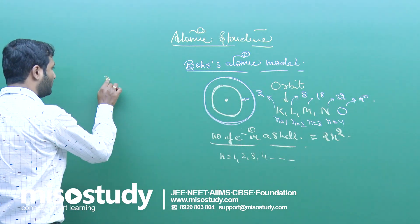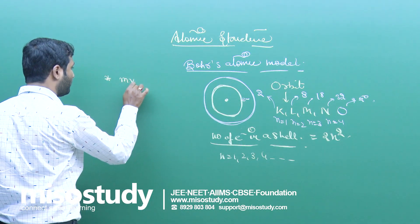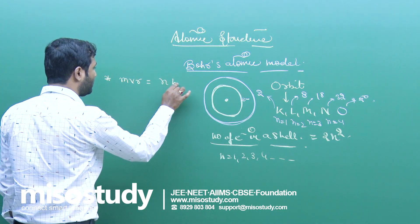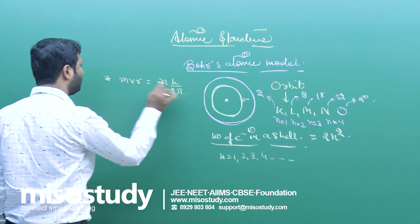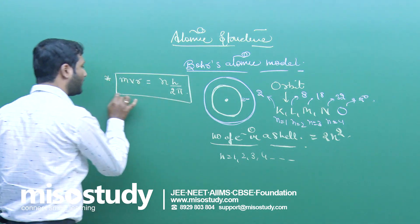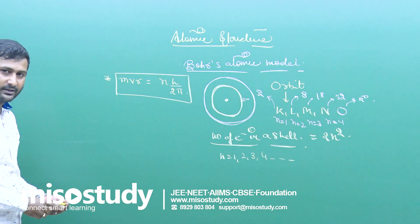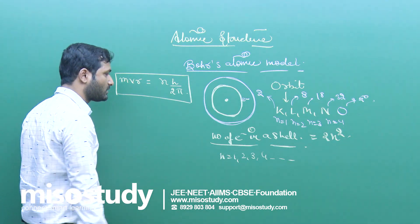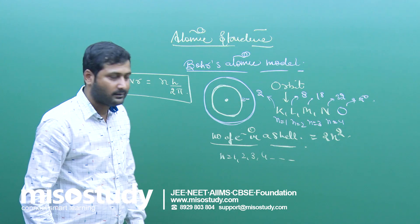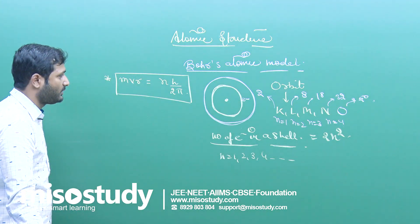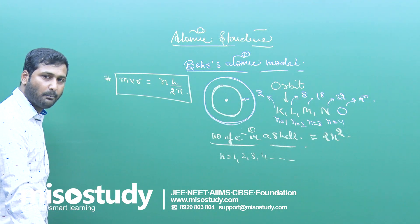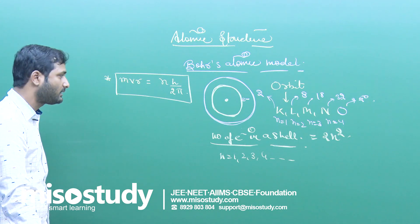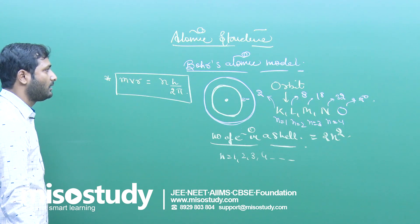And the next main thing, he told angular momentum is the integral multiple of h upon 2π. If an electron revolves in the second orbit, then its angular momentum equals 2h upon 2π. If it revolves in fifth orbit, that will be equal to 5h upon 2π.